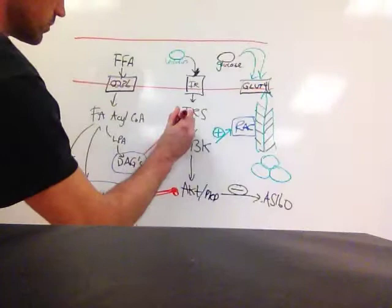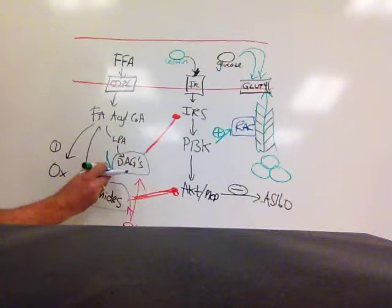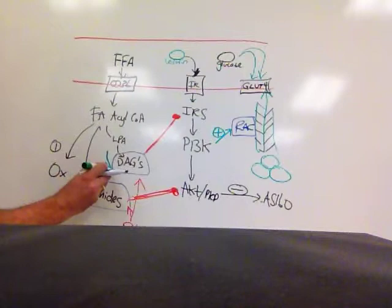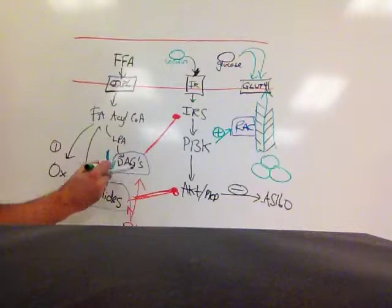In contrast, our fitter participant oxidizes fat at a faster rate, thereby decreasing the accumulation of reactive lipid species. Because the turnover of FA oxidation is faster, it results in decreased inhibition of the insulin signaling pathway, which allows for increased GLUT4 translocation and subsequent uptake of blood glucose.